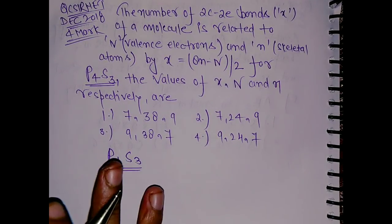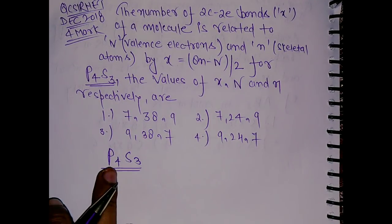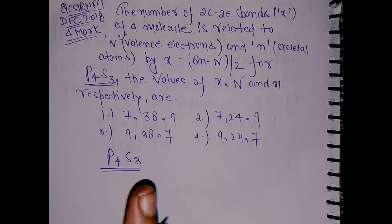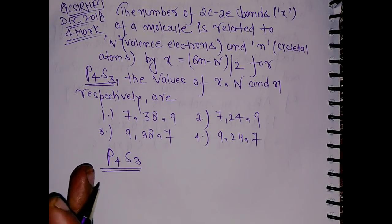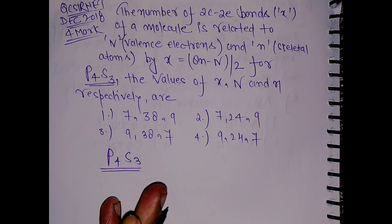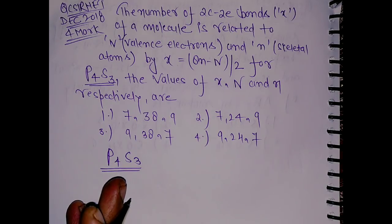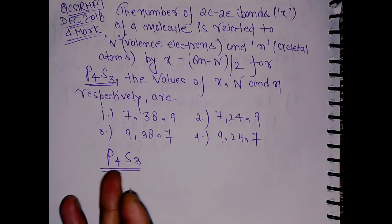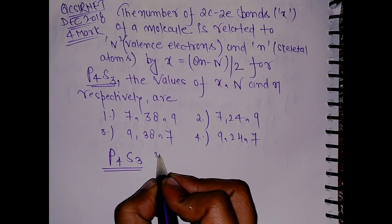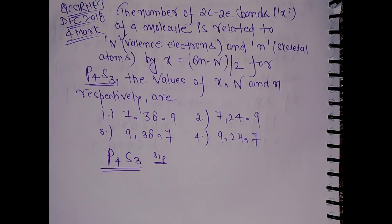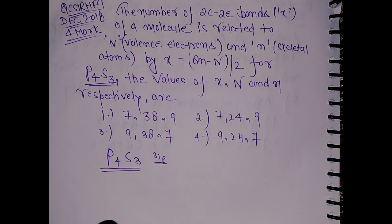In my channel I have already made a dedicated video on P4S3 where I was describing the features of this compound, including how many phosphorus-phosphorus bonds are there, what is the structure, how many phosphorus-sulfur bonds are there, what is the point group like C3V, and other things like 31P NMR which gives one doublet and one quadruplet. Please go and watch that video.